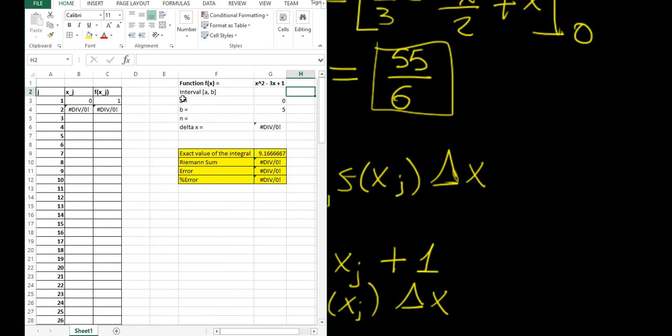The interval is defined by a equals 0, b equals 5, and then n is the number we're going to choose. Δx is set to the equation, so that's b minus a over n.